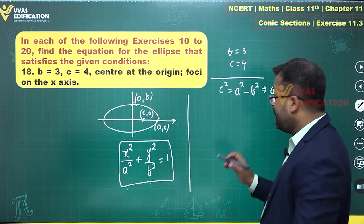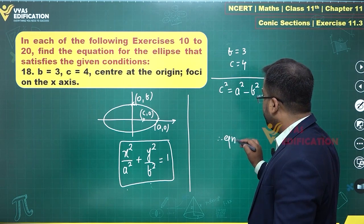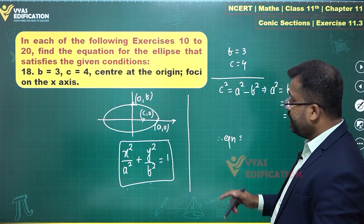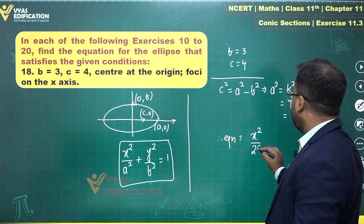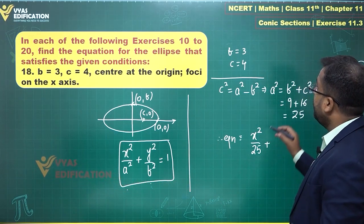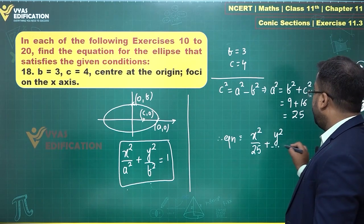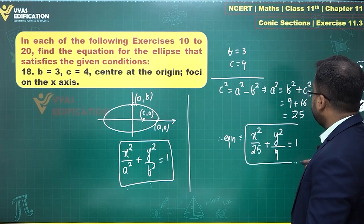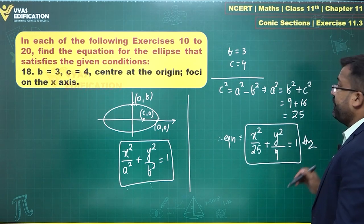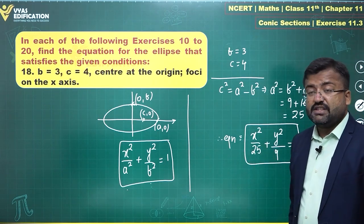That's pretty simple. So therefore, the equation for this particular ellipse will become x square upon a square, what is that? 25, plus y square upon b square, which is 9, is equal to 1. That's the required equation for this ellipse.